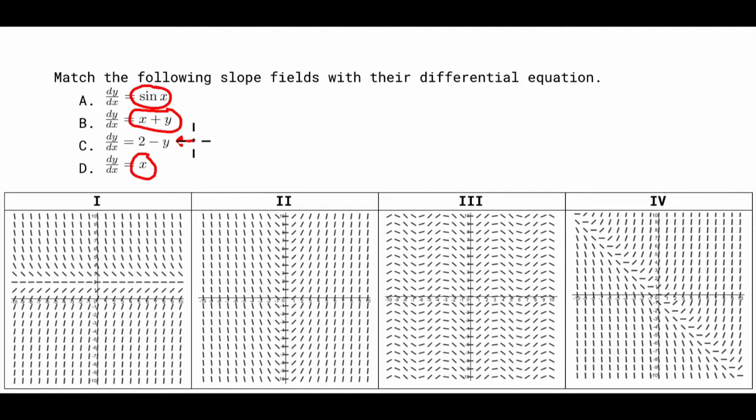All right, so for A it says sin x. Well it's kind of easy because you can kind of see that this one's actually going up and down. The y stays the same like I just said. It only changes when the x changes. Also if you notice if you put 0 in for x it would be 0 which is what we have right here.